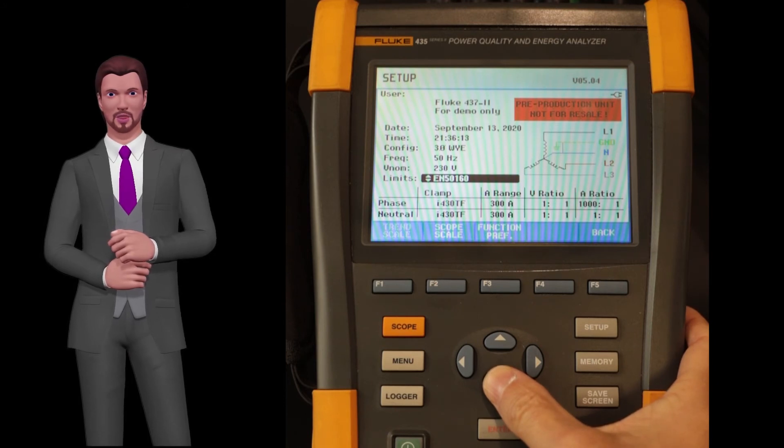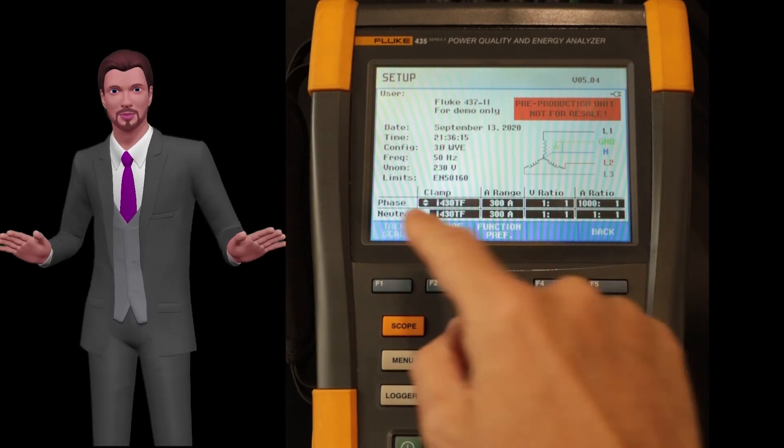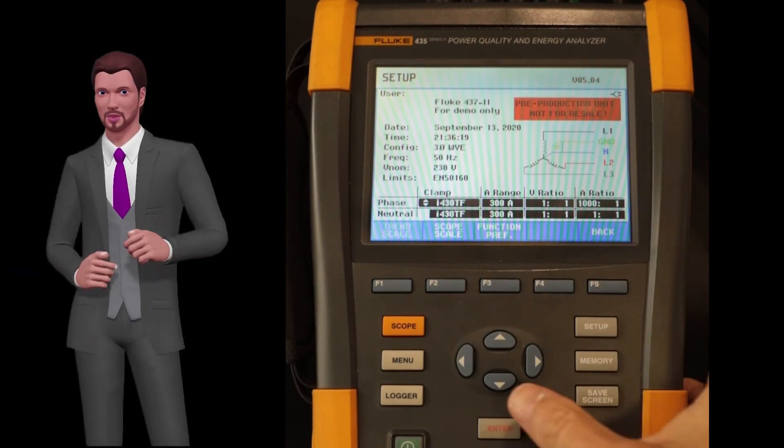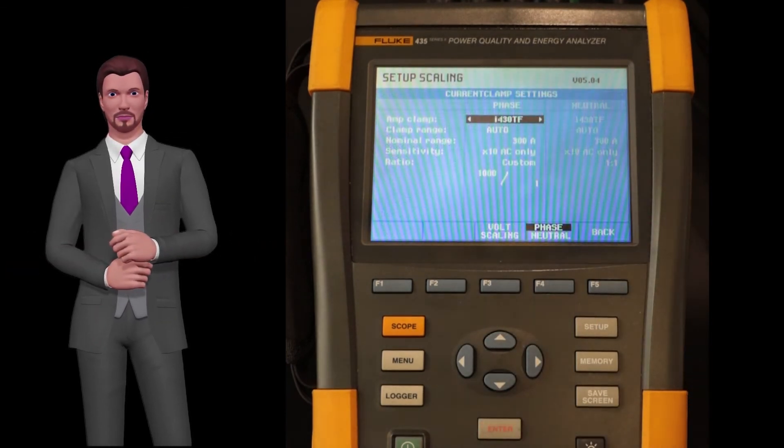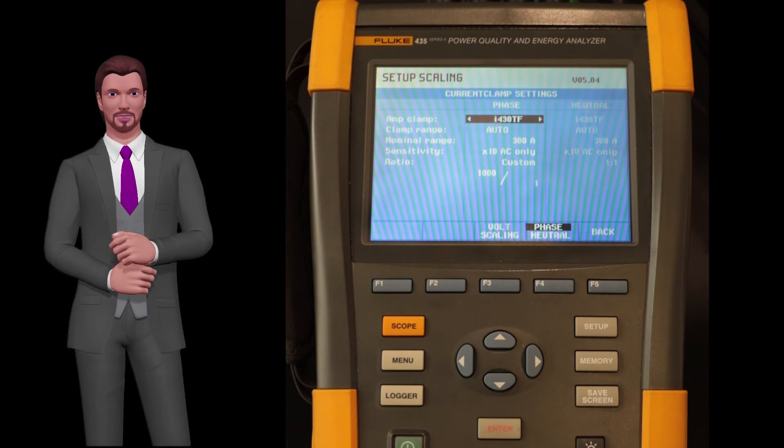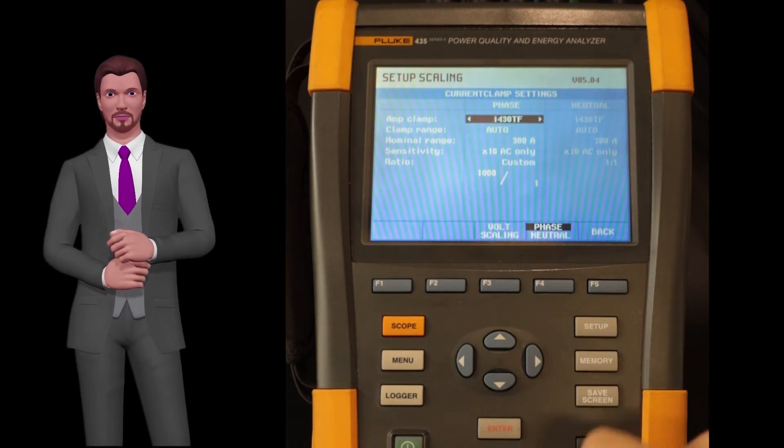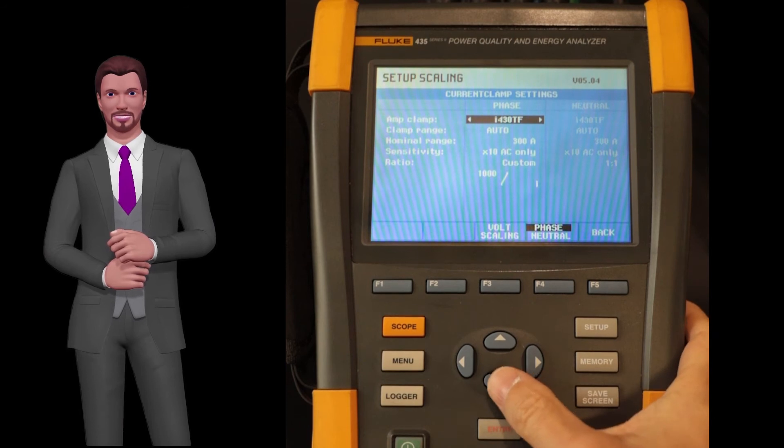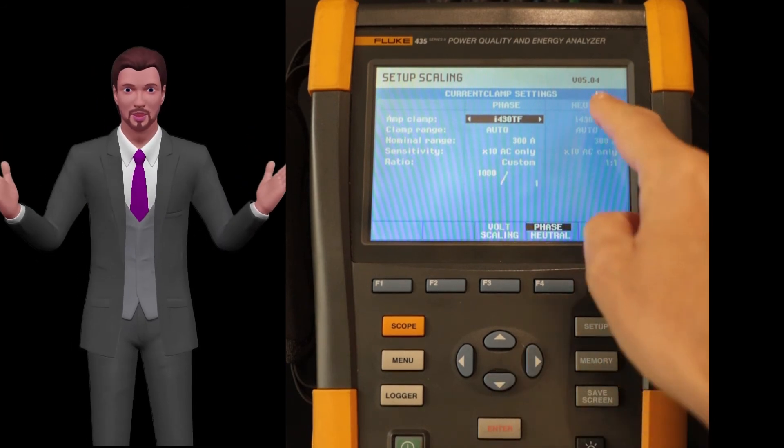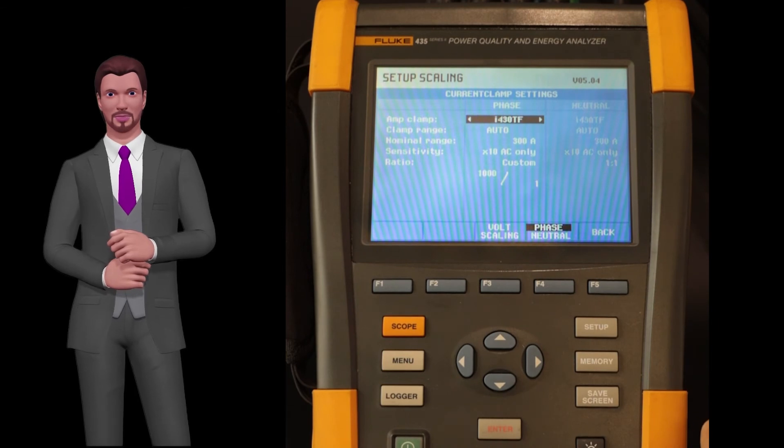To do this, press the down arrow until the table that appears at the bottom is highlighted. Once it is highlighted, press the enter key. By default, the current probe configuration page appears. For phases 1, 2 and 3, the unit uses the same configuration, but for neutral the unit allows us to select, if desired, a different type of current probe.